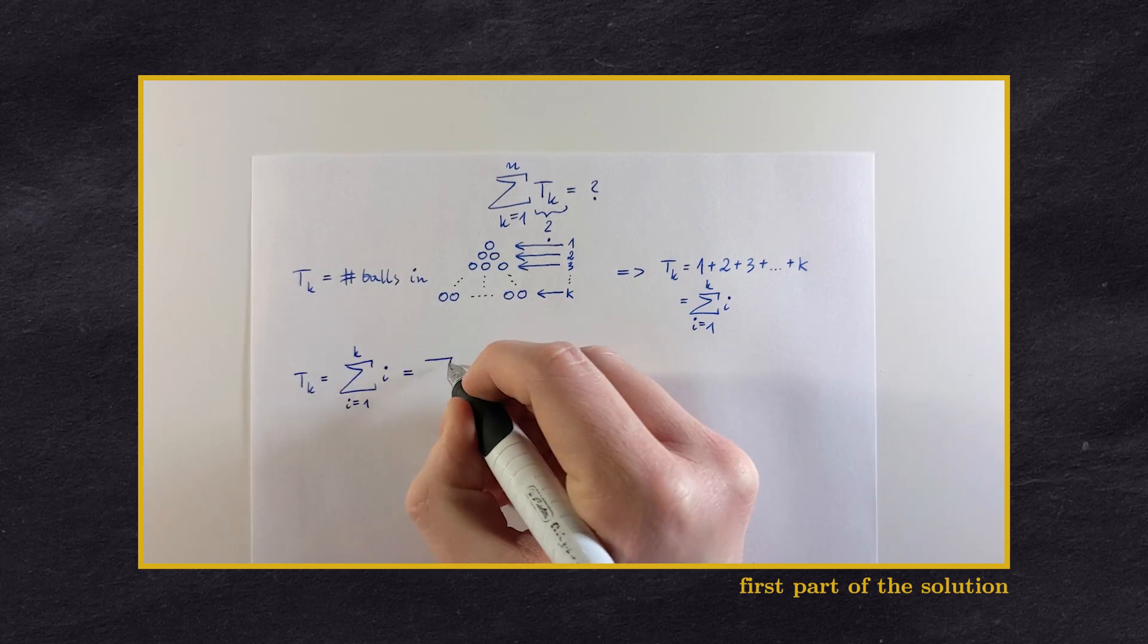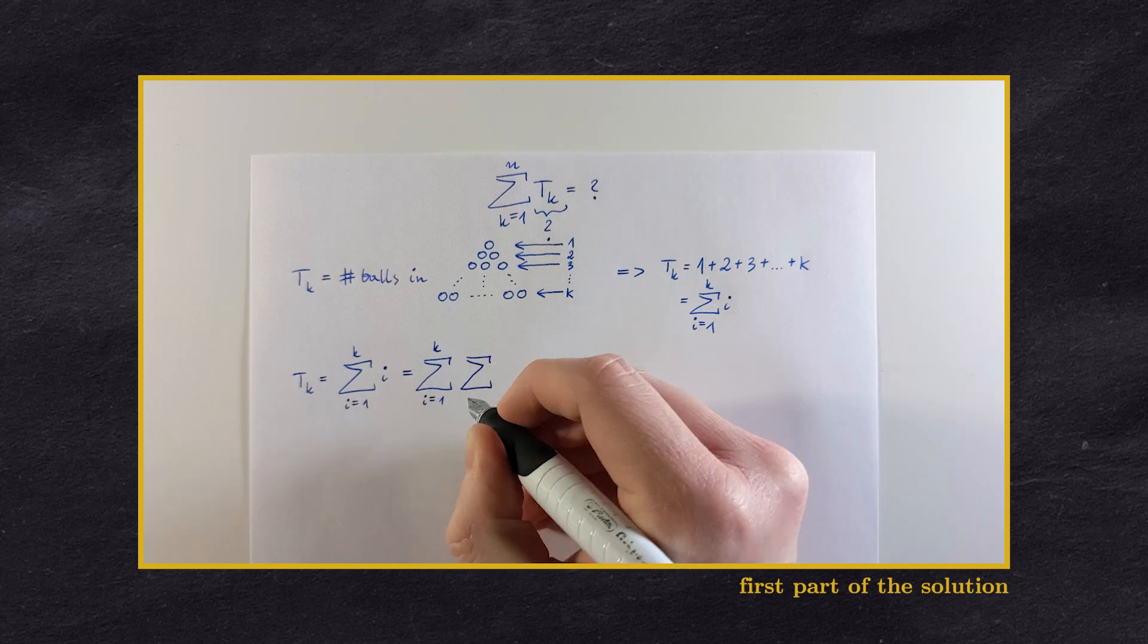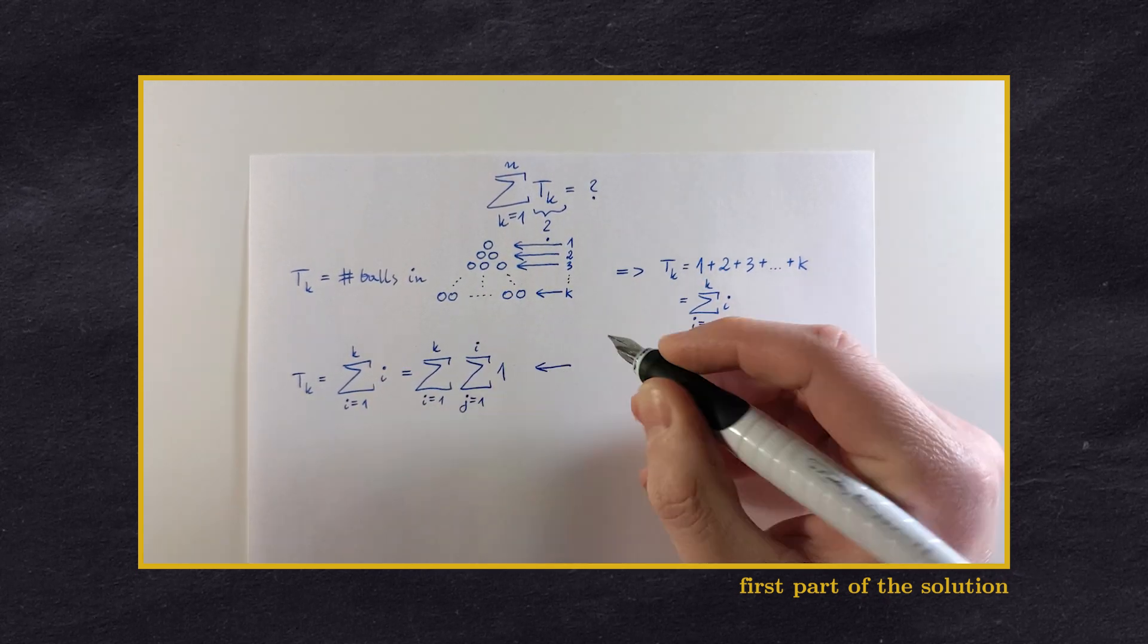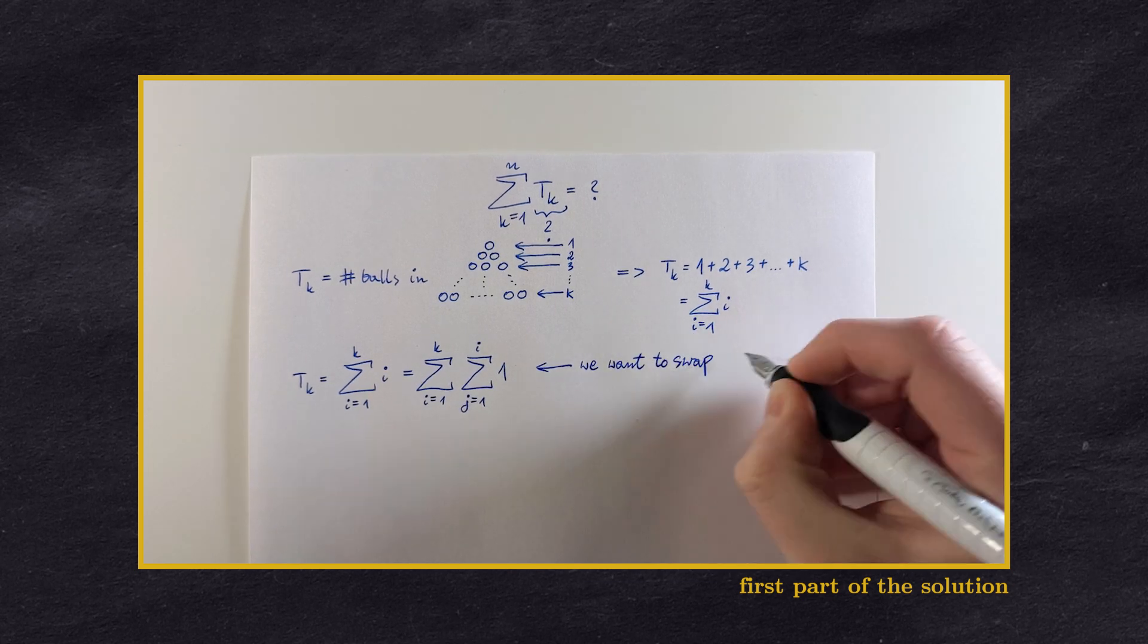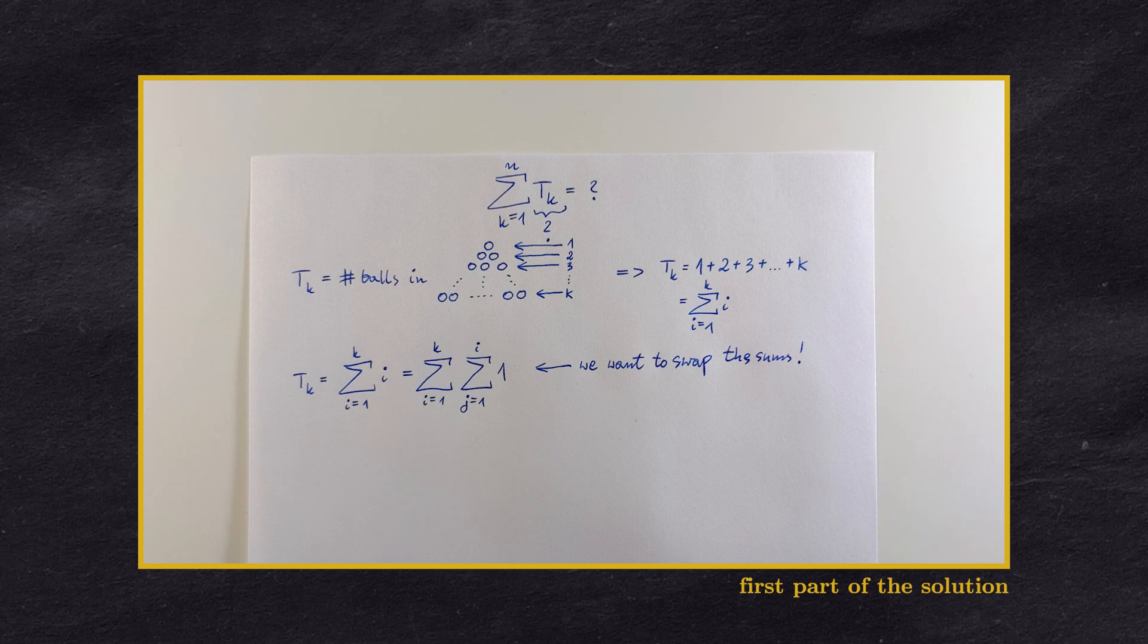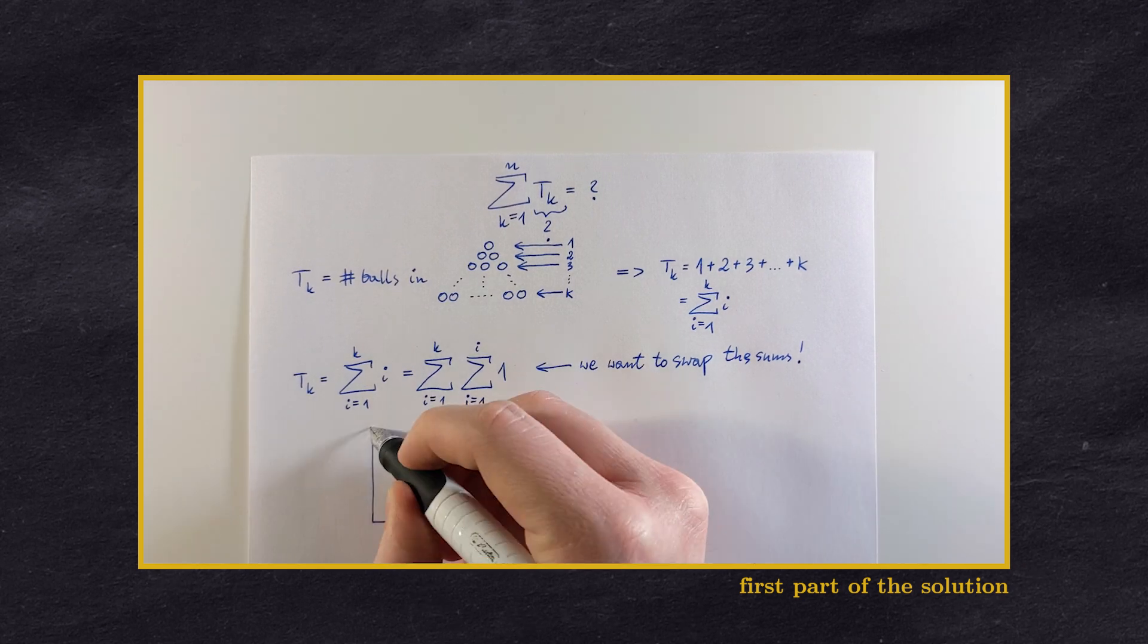The first step will be changing this i to a second sum, going from 1 to i over 1. We did it because now we want to interchange the order of summation. There is a slight problem though. The second sum is dependent on the index from the first sum. Therefore, we need a drawing.